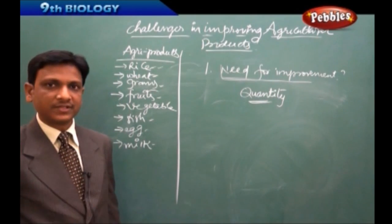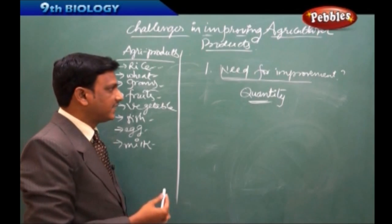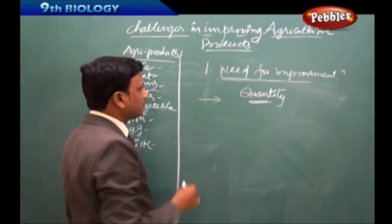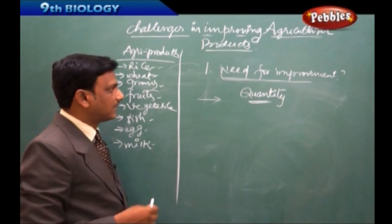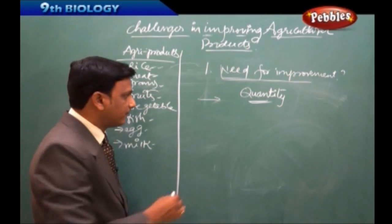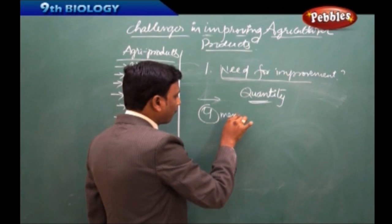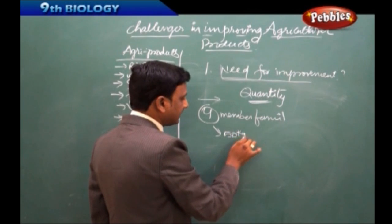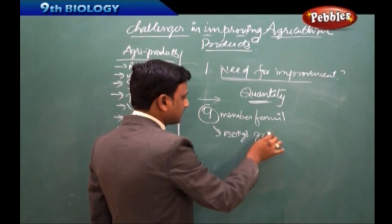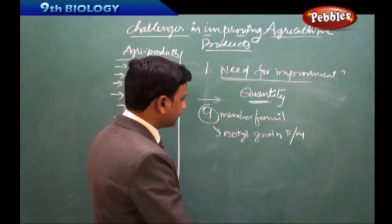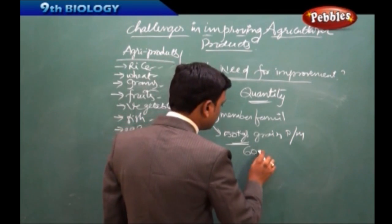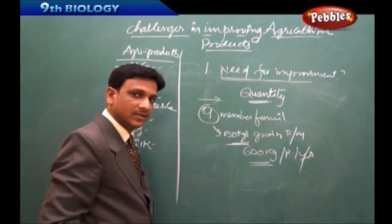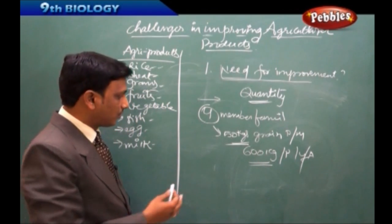The amount of agricultural products should be increased, and at the same time better quality should also be produced. For example, to better understand the need for improvement, take a four-member family — it requires 50 kilograms of grains per month, which amounts to 600 kilograms per year. That is a very large amount.